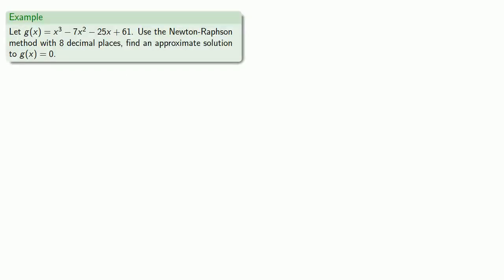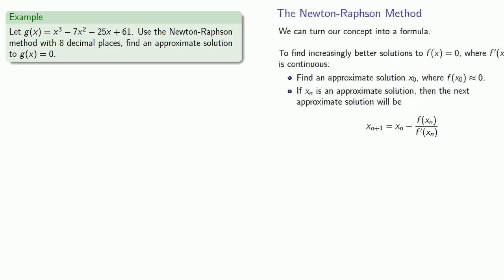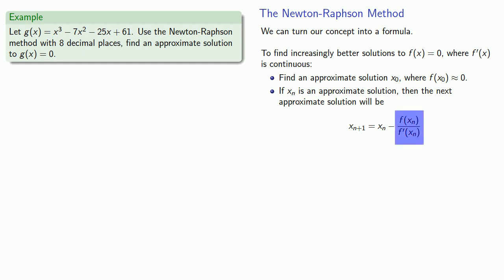We can apply our method, but this time let's keep 8 decimal places. Our formula requires both the function and the derivative, so we'll go ahead and write those down. We'll start out with x₀ equals 0 as before, because we knew that 0 was an approximate solution.